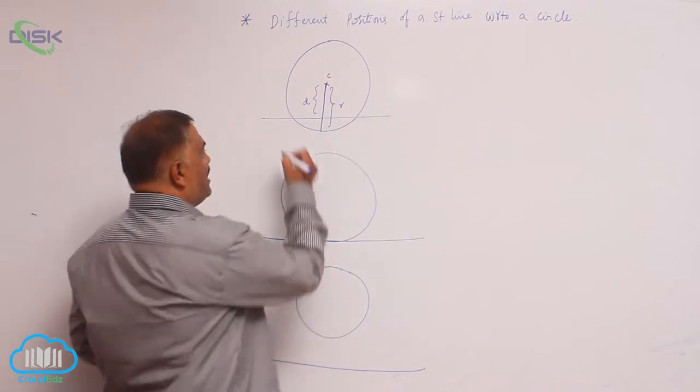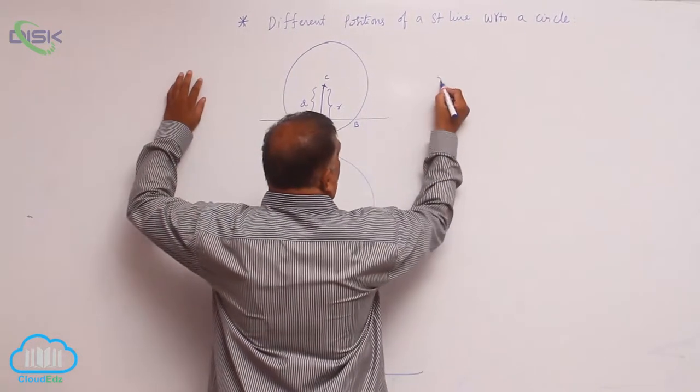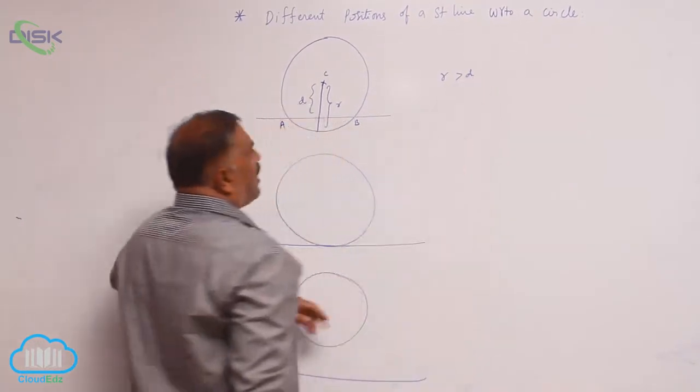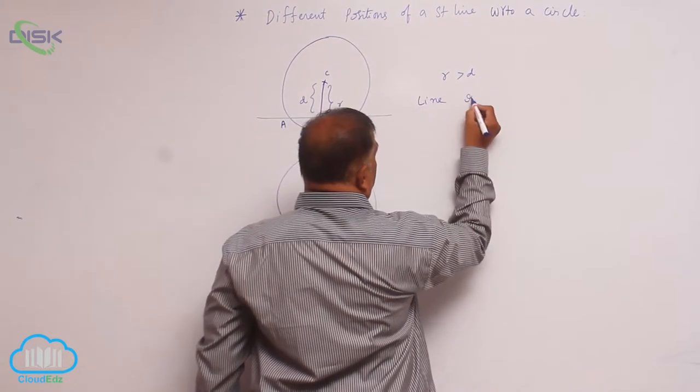If a line AB intersects the circle, then R is greater than D. R is greater than D means the straight line intersects the circle.